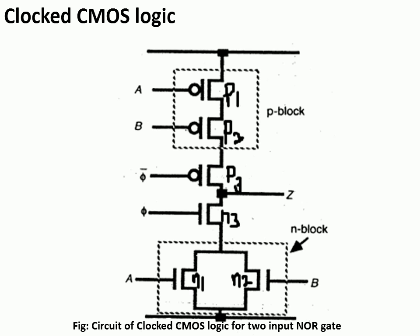Here we have one circuit diagram of clocked CMOS logic for a two-input NOR gate. We have the pull-up network and pull-down network, as well as two more transistors at the intermediate level. In the N block, transistors N1 and N2 are connected in parallel, and at the PMOS side, the two PMOS transistors are connected in series as shown in the P block.